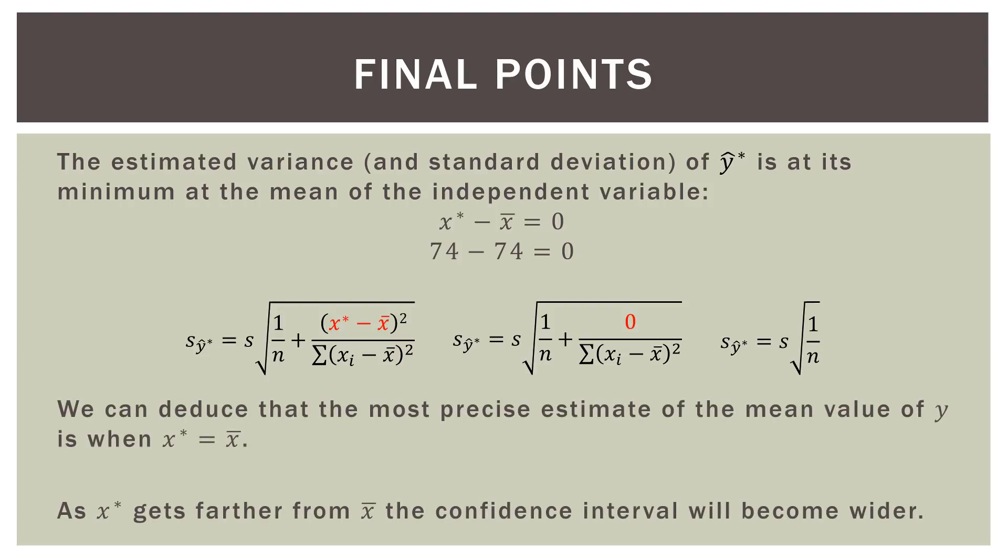So we can deduce that the most precise estimate of the mean value of y is when x star, what we're interested in, is x bar. So in this case, you could actually put it back in and say we can deduce that the most precise estimate of the mean value of y occurs when x star equals 74. Because 74 is also the mean value of x. That's where the most precise. So as x star that we're interested in gets farther from the mean, the confidence interval will become wider, and the confidence band will flare out towards the end. And that is why.